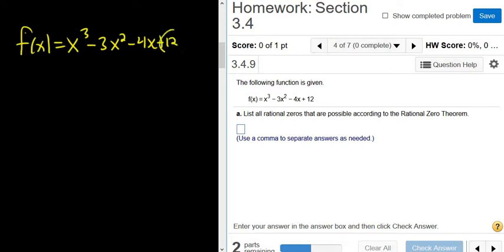So you start by looking at the factors of the last one, so factors of 12, over the factors of the first one, so factors of 1. The factors of 12 are 1, 2, 3, 4, 6, and 12.